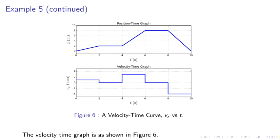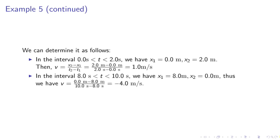So the hint was to calculate the velocity on the different intervals. So calculate vx from each of the points as follows. In this interval 0 to 2 seconds we have x1 equals 0 meters and x2 equals 2 meters. And v equals x2 minus x1 over t2 minus t1 equals 2.0 meters minus 0 meters divided by 2.0 seconds minus 0 second equals 1.0 meters per second. Likewise we can calculate in the 8 to 10 second interval velocity of negative 4 meters per second.